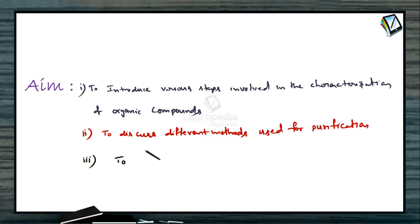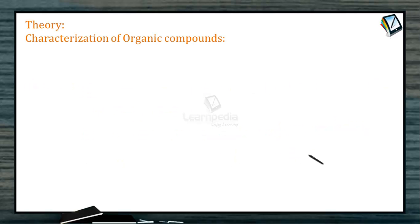By using some techniques you can identify the composition of the given compound — that is quantitative analysis. Now, for characterization of organic compounds, whether prepared in the laboratory or obtained from natural sources, organic compounds have some impurities. By using some methods you can purify those impurities.